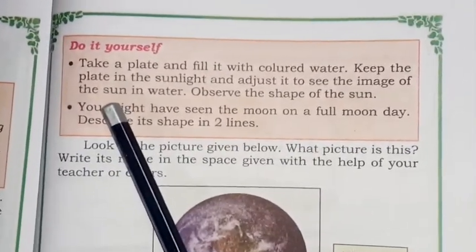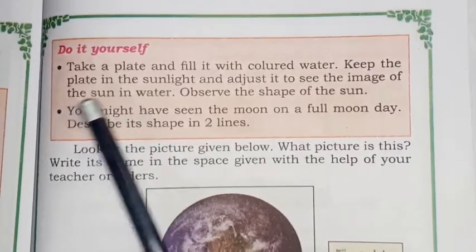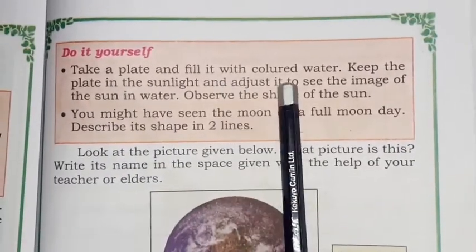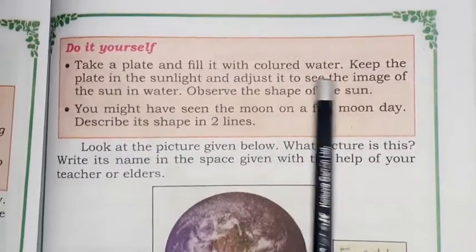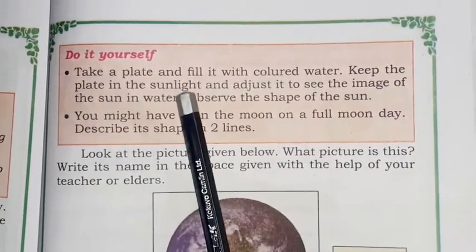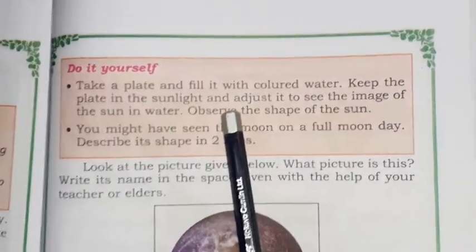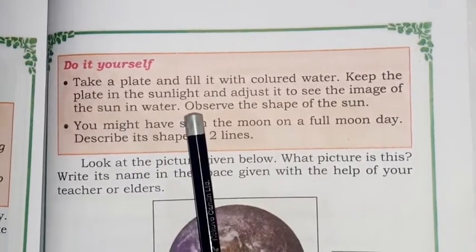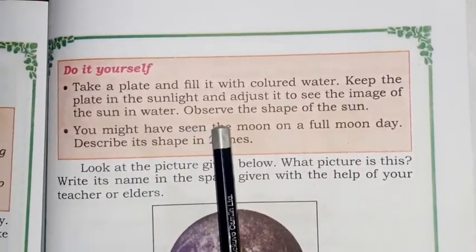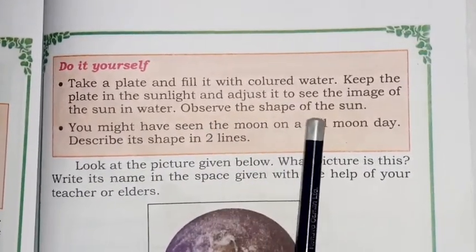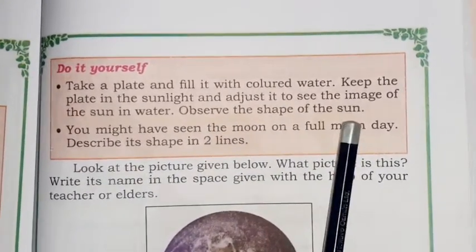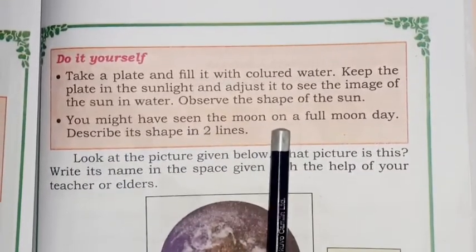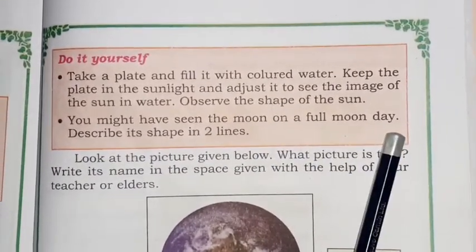Here is an activity: take a plate and fill it with colored water. Keep the plate in the sunlight and adjust it to see the image of the sun reflected in the water. Observe the shape of the sun. You might have also seen the moon on a full moon day.